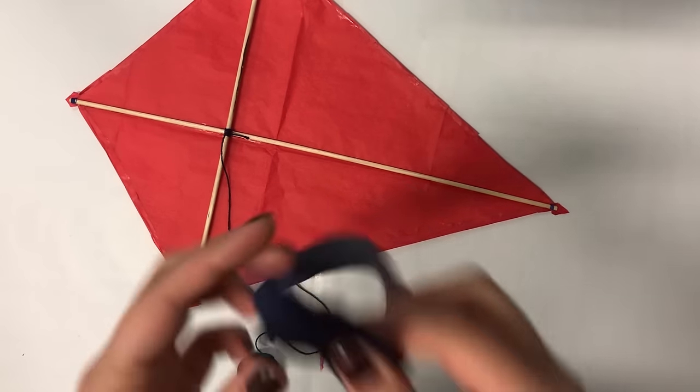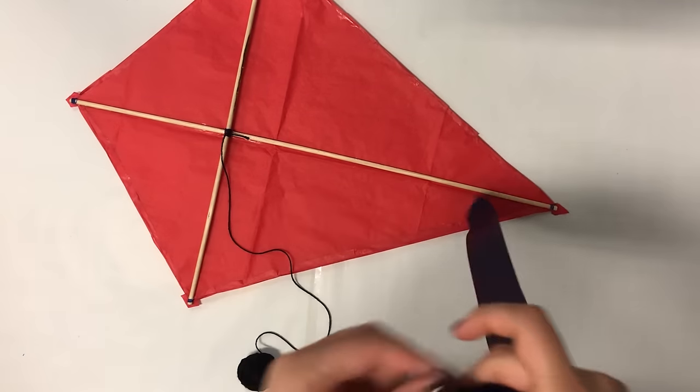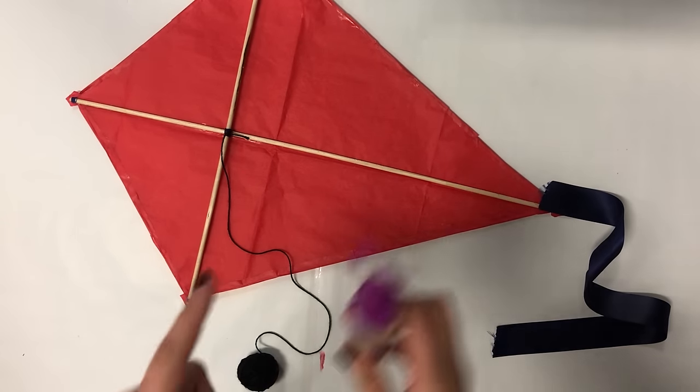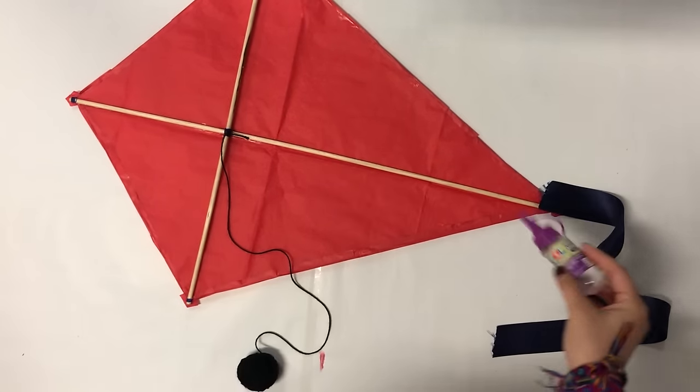But you can put a ribbon for extra decoration to make it look cool and to see when it is windy. Use silicone to glue it to the kite.